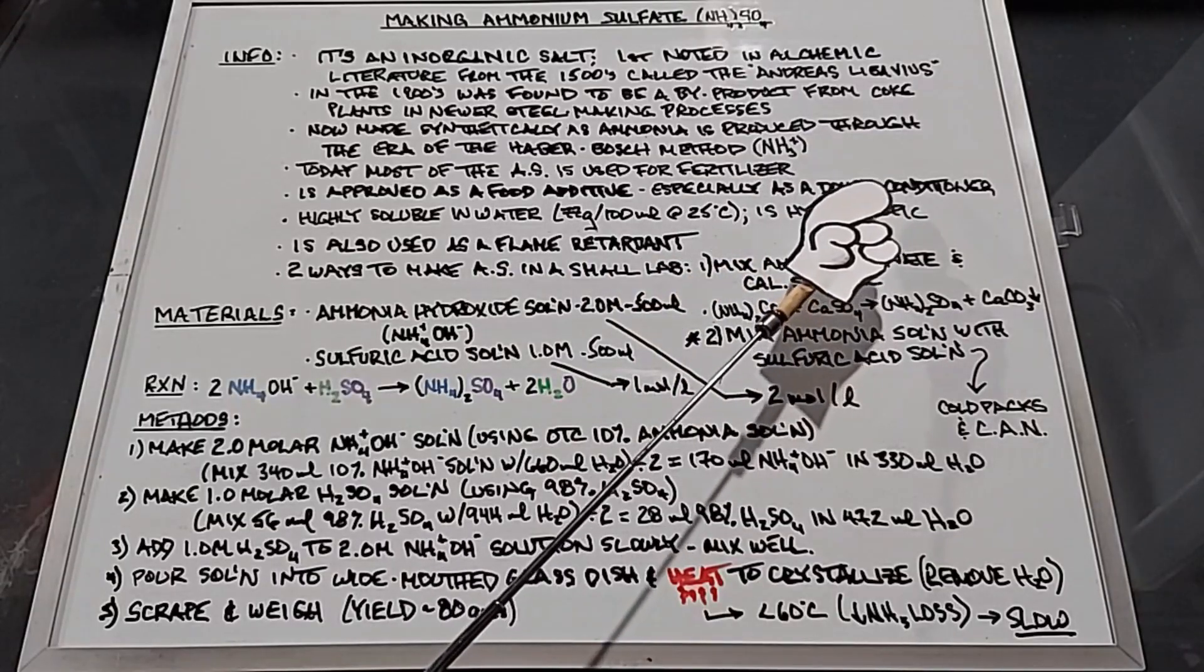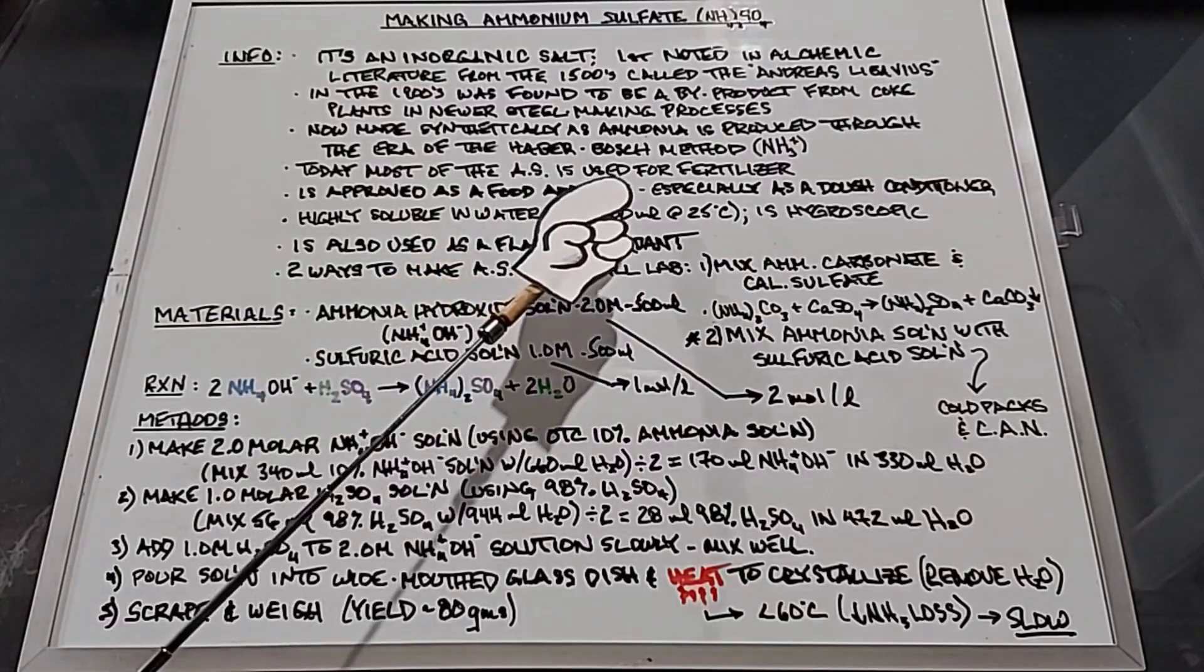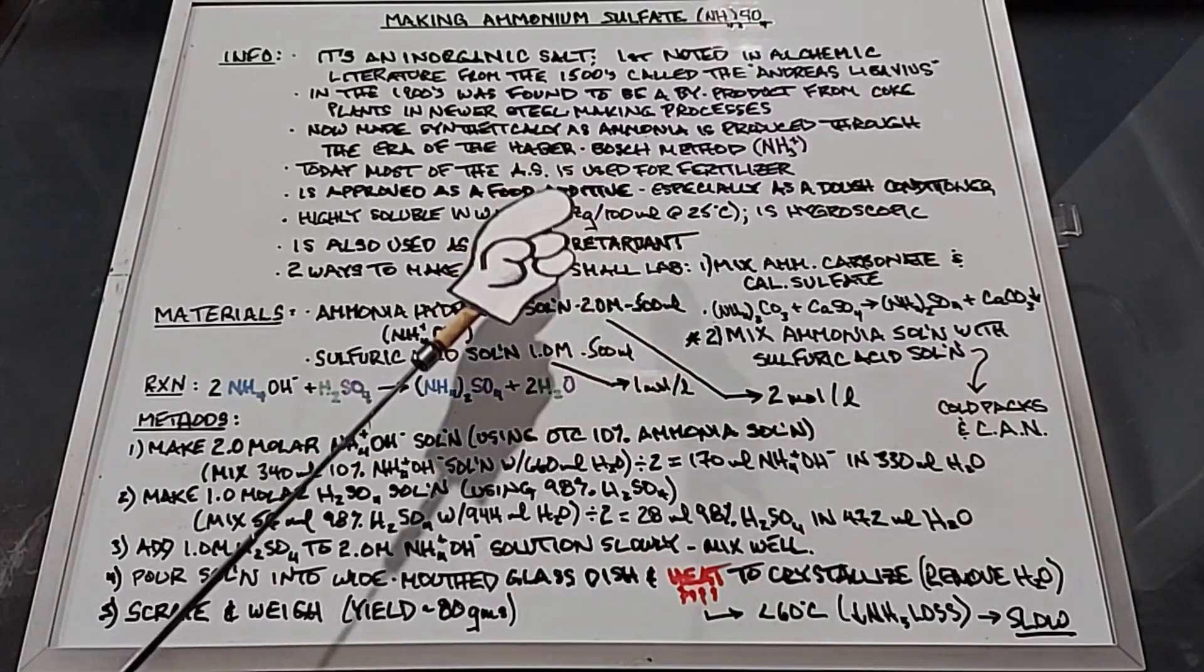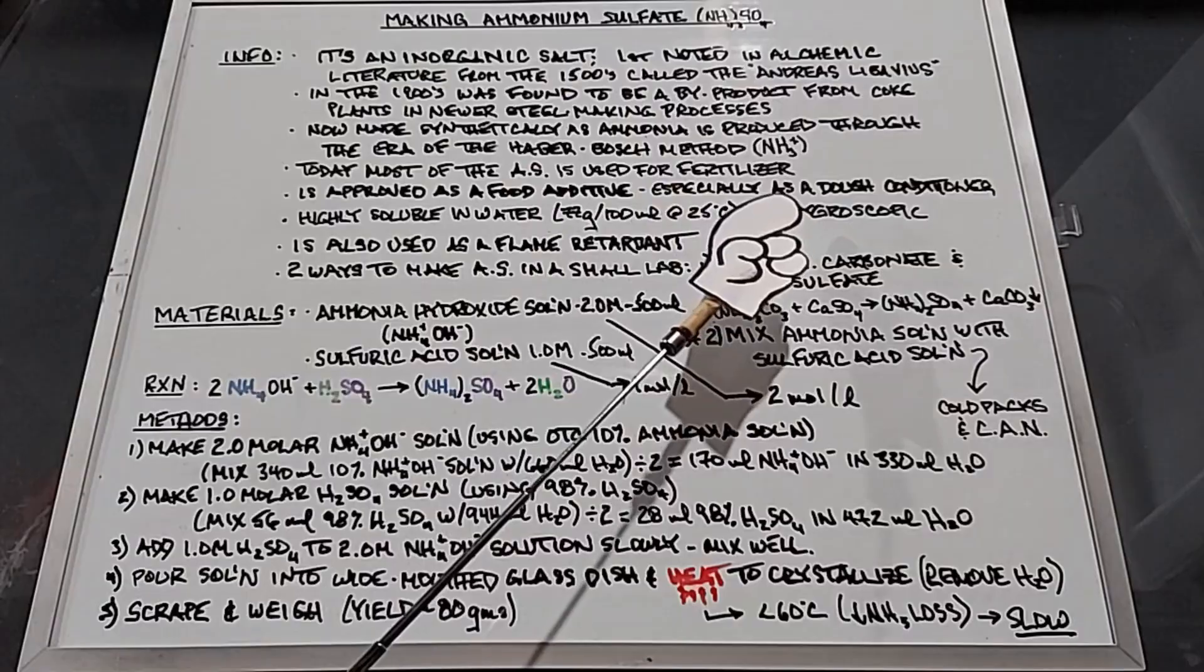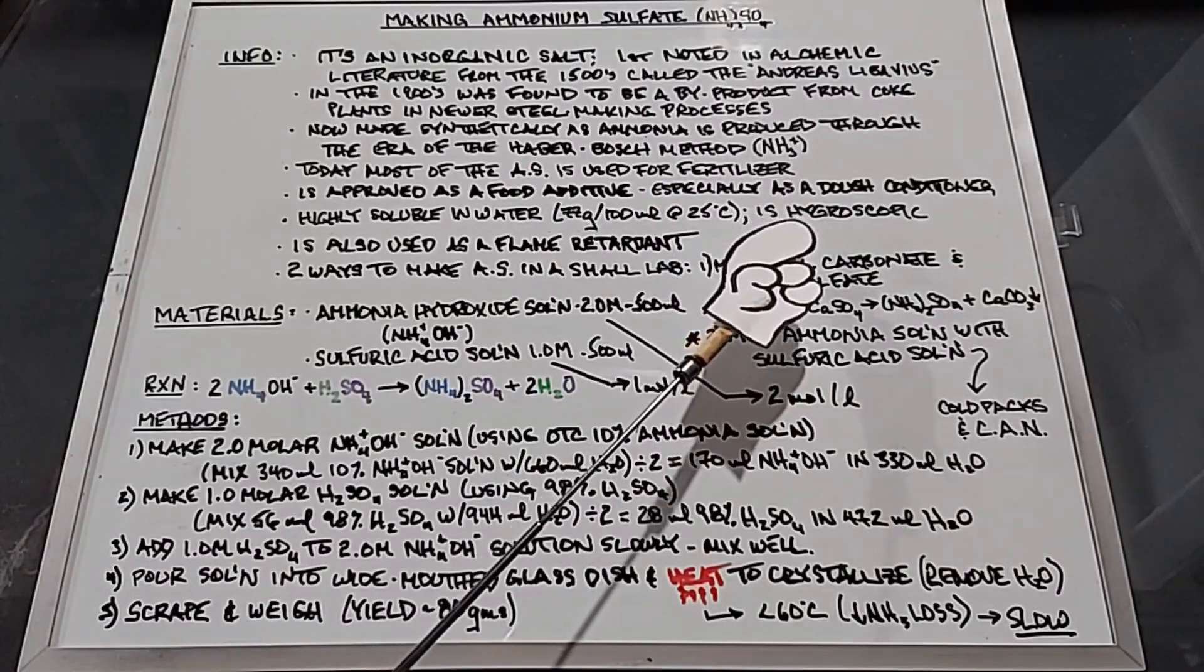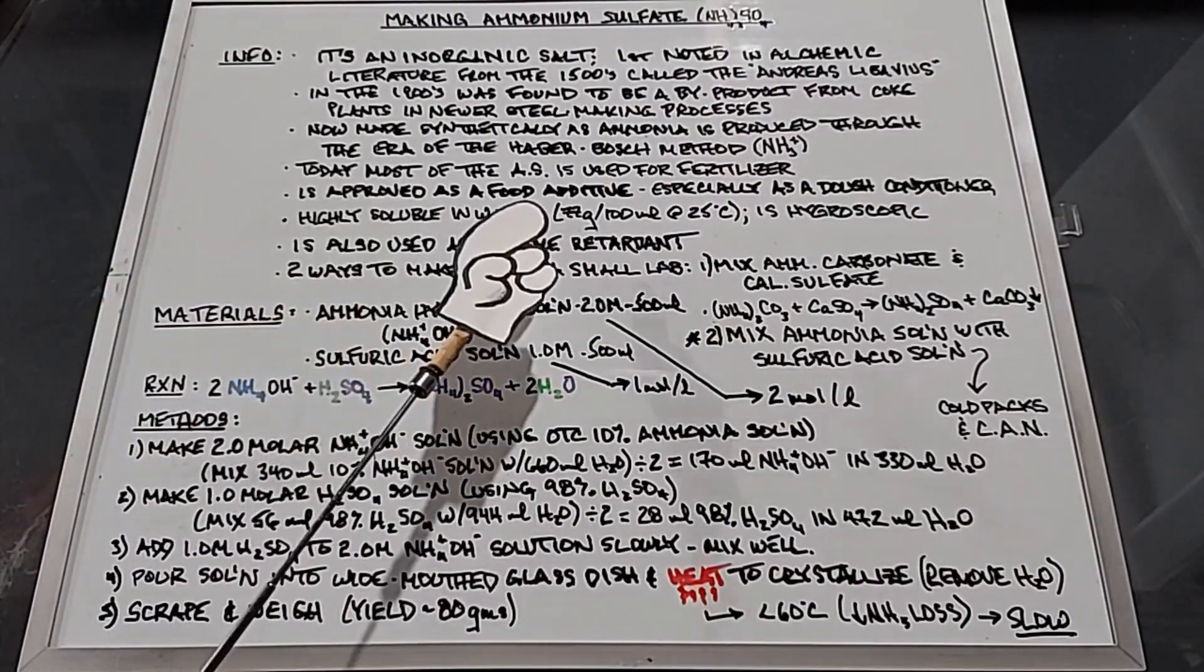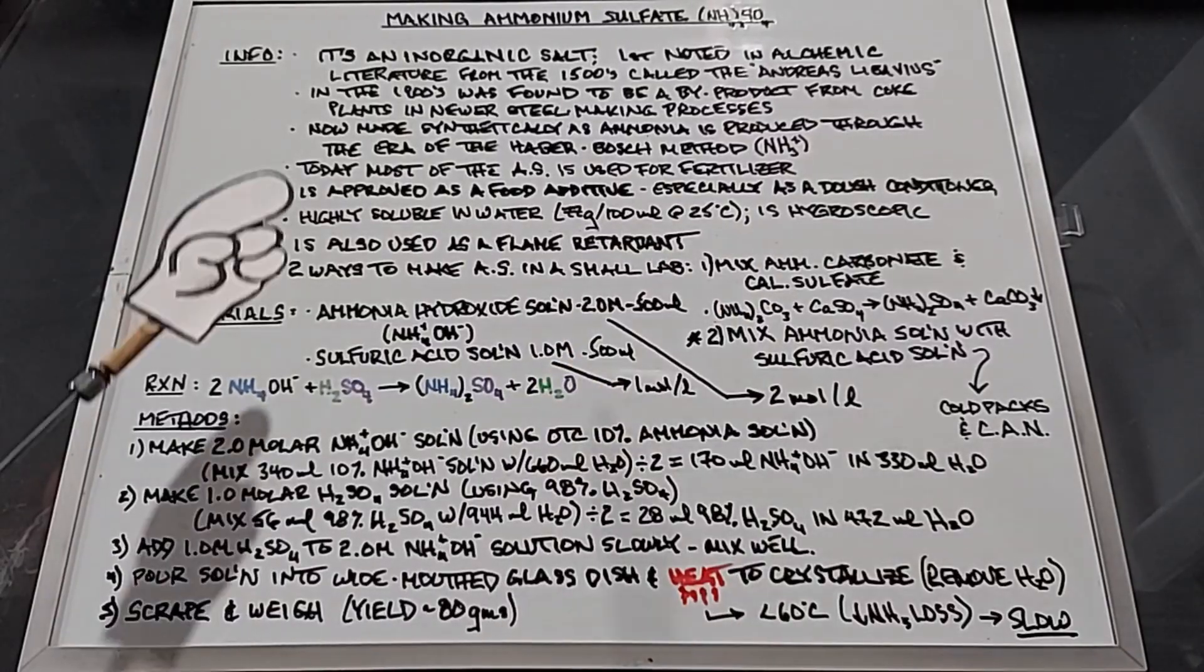Ammonium sulfate is highly soluble in water: 77 grams per 100 milliliters at 25 degrees Celsius, and at 100 degrees Celsius you can dissolve more than 100 grams. On its own it is slightly hygroscopic so you have to be careful because it will eventually melt in humid conditions. Historically it was noted to be a flame retardant, and although it's certainly not the best one it does work.